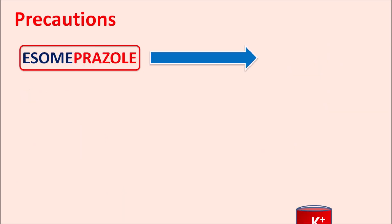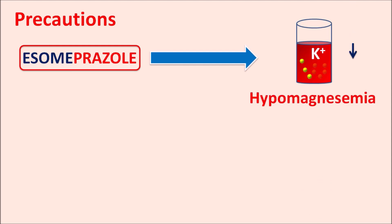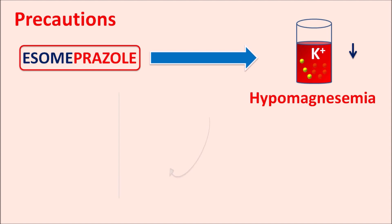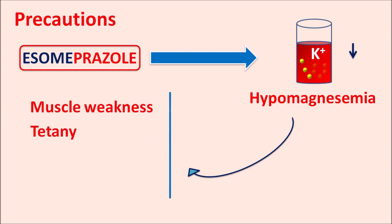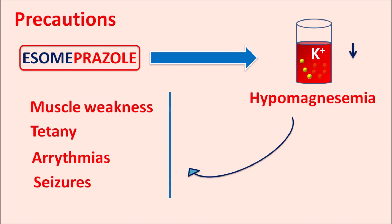Similarly, this drug can affect serum magnesium levels. S-omeprazole can reduce serum magnesium levels, resulting in hypomagnesemia. If not controlled, this can produce various effects such as muscle weakness, tetany, muscle paralysis, cardiac arrhythmias, or even seizures. So magnesium levels should be carefully checked when this drug is prescribed for long-term treatment.